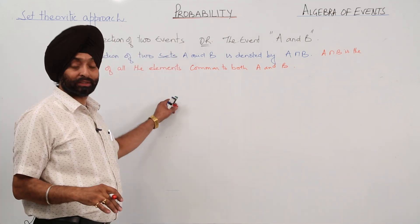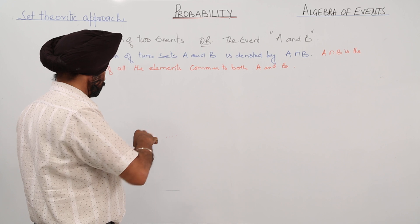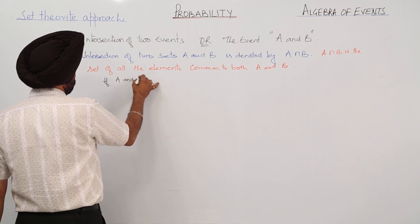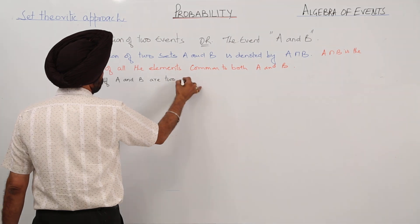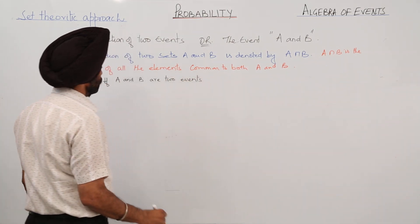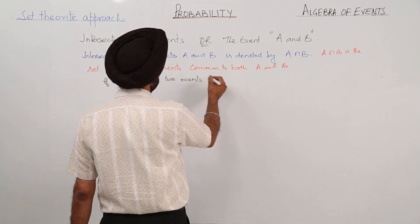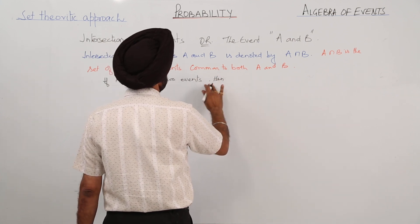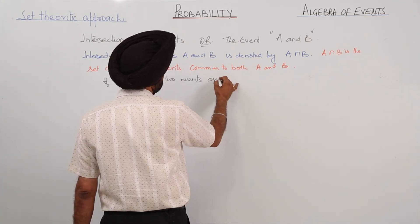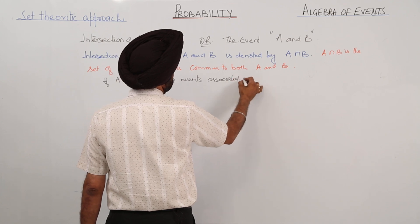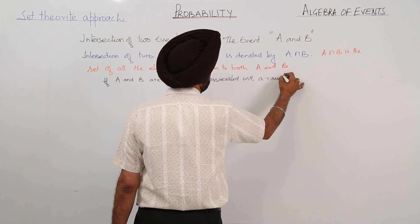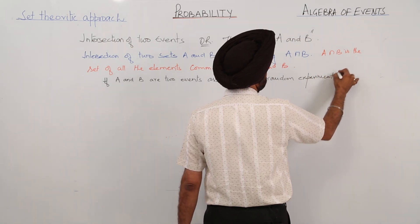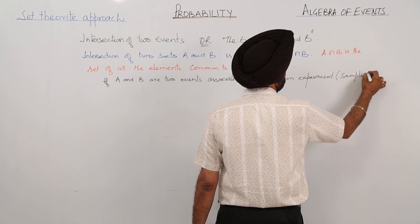So this is basically about the set. Now, if A and B are two events associated with a random experiment, with a sample space, if A and B are two events.